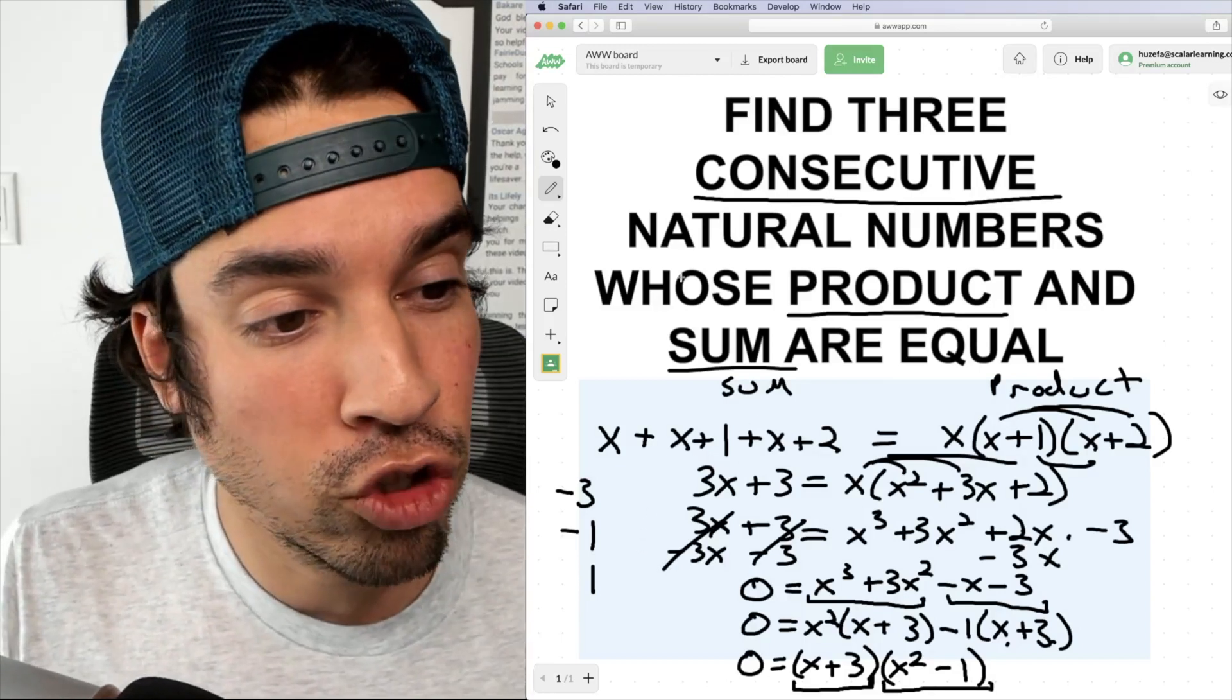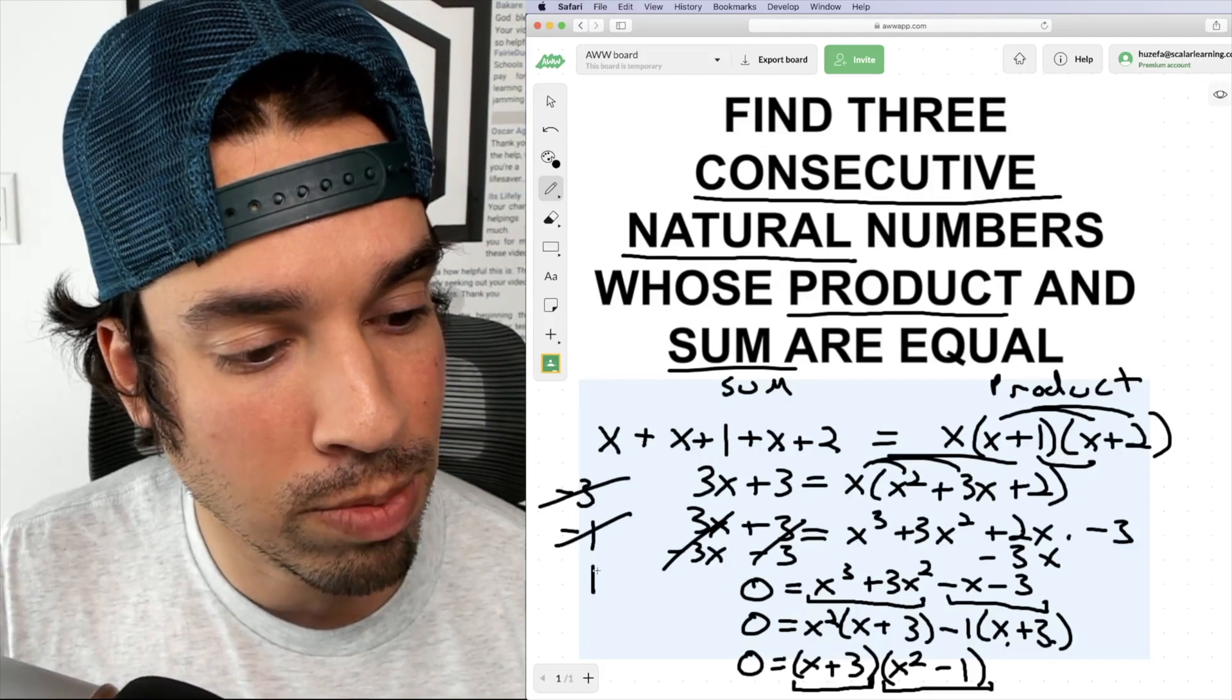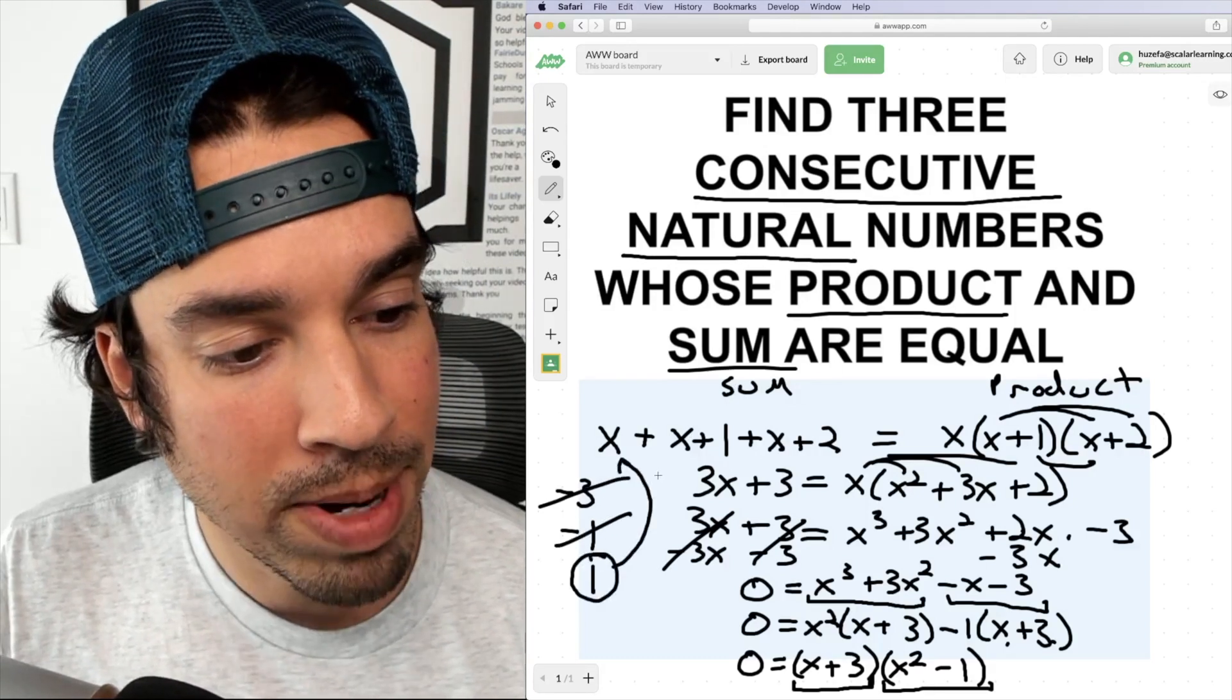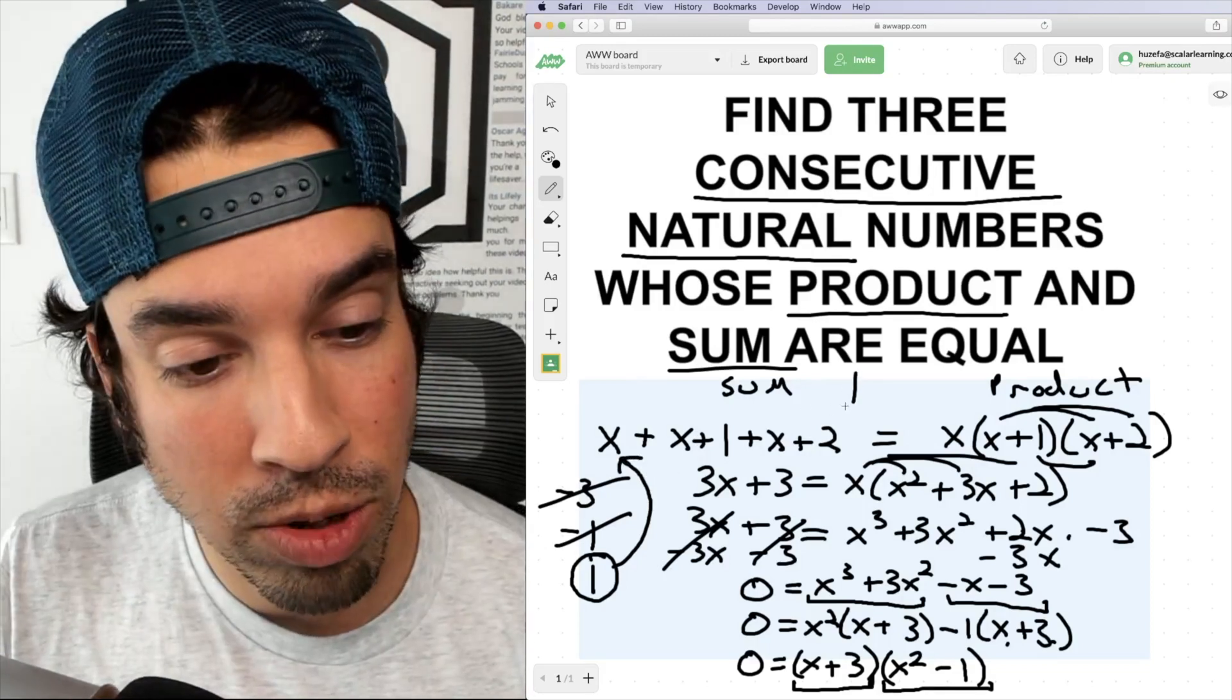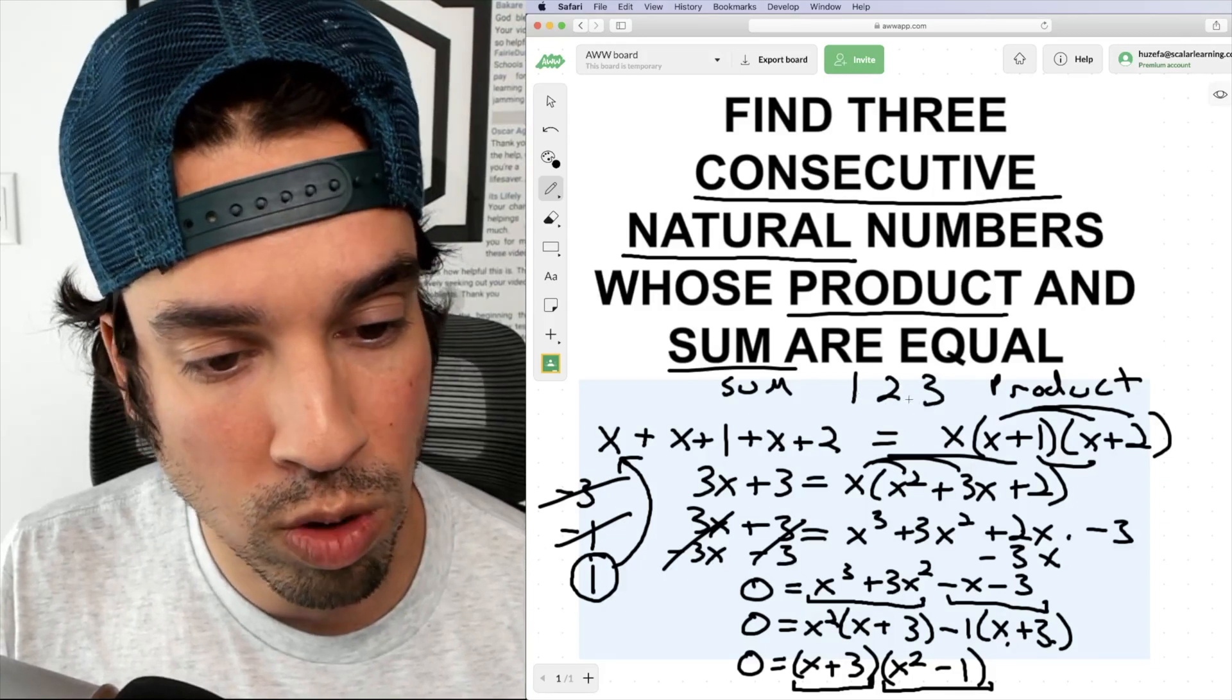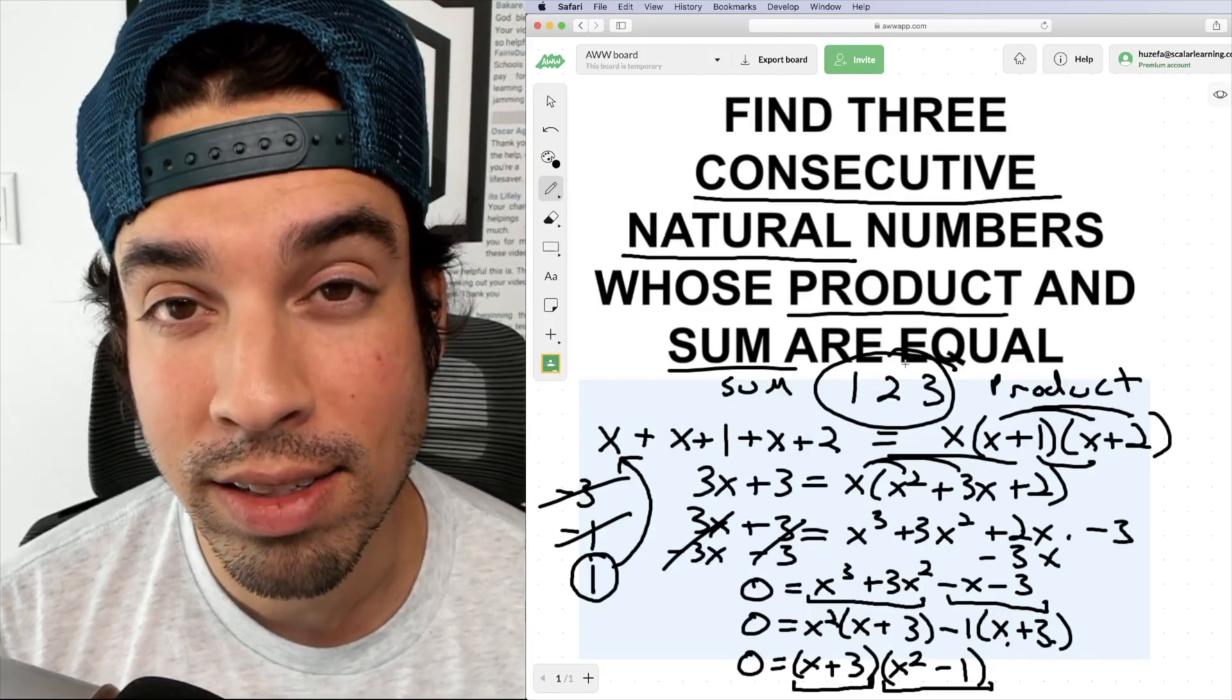But we have the restriction that these have to be natural numbers. So I can't have negatives as my solution, which means my x value has to be one. If my x value is one, x plus one, which is the second number has to be two and x plus two, which is the third number has to be one plus two, which is three. So your three numbers are one, two, and three.